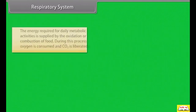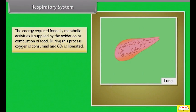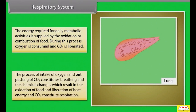The energy required for daily metabolic activities is supplied by the oxidation or combustion of food. During this process, oxygen is consumed and CO2 is liberated. The process of intake of oxygen and outpushing of CO2 constitutes breathing, and the chemical changes resulting in the oxidation of food with liberation of heat energy and CO2 constitute respiration.